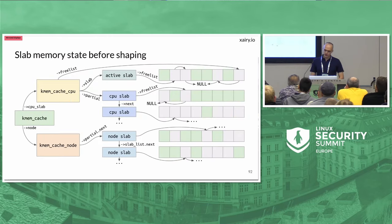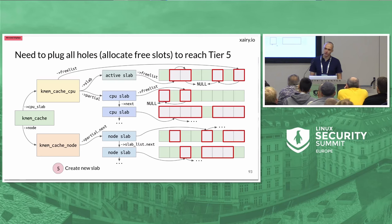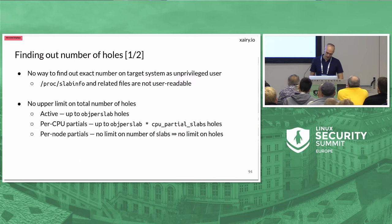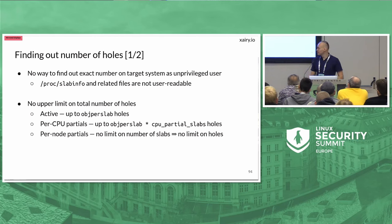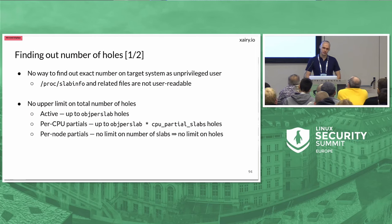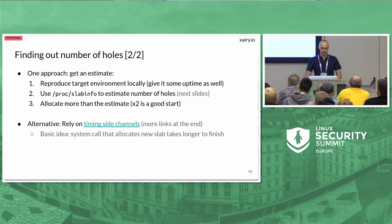The question is how many objects we need to allocate to fill all the holes and get a new active slab. Unfortunately there is no way for an unprivileged user to find out the exact number — /proc/slabinfo is not accessible to unprivileged users, and there is no upper limit on free slots since the per-node list has no bound. Instead, people use one of two approaches: estimate the number of holes by reproducing the target environment locally and using a debugger to read the numbers, then allocate perhaps twice or ten times as many objects to be safe.